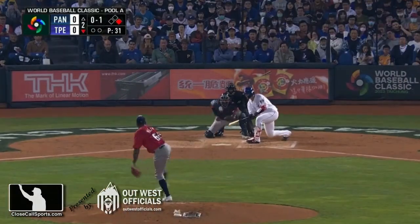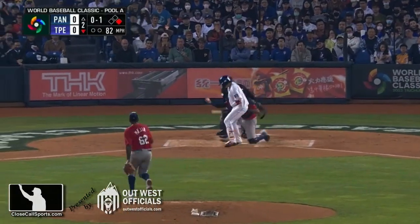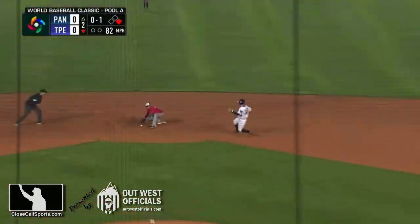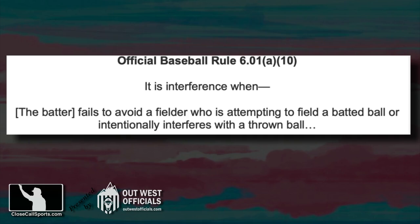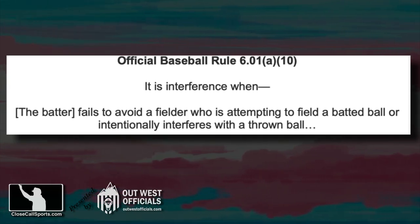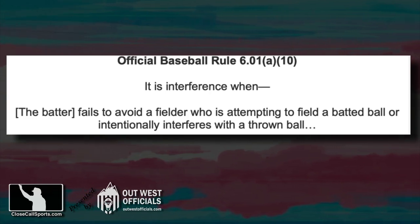This is early in the game and it concerns potential interference, maybe? I had to bifurcate this play so we don't get killed on copyright, but we start our search for the answer at Fishbowl Baseball Rule 601A10. It is interference one — in this case, the batter fails to avoid a fielder who is attempting to field a batted ball, or intentionally interferes with a thrown ball.